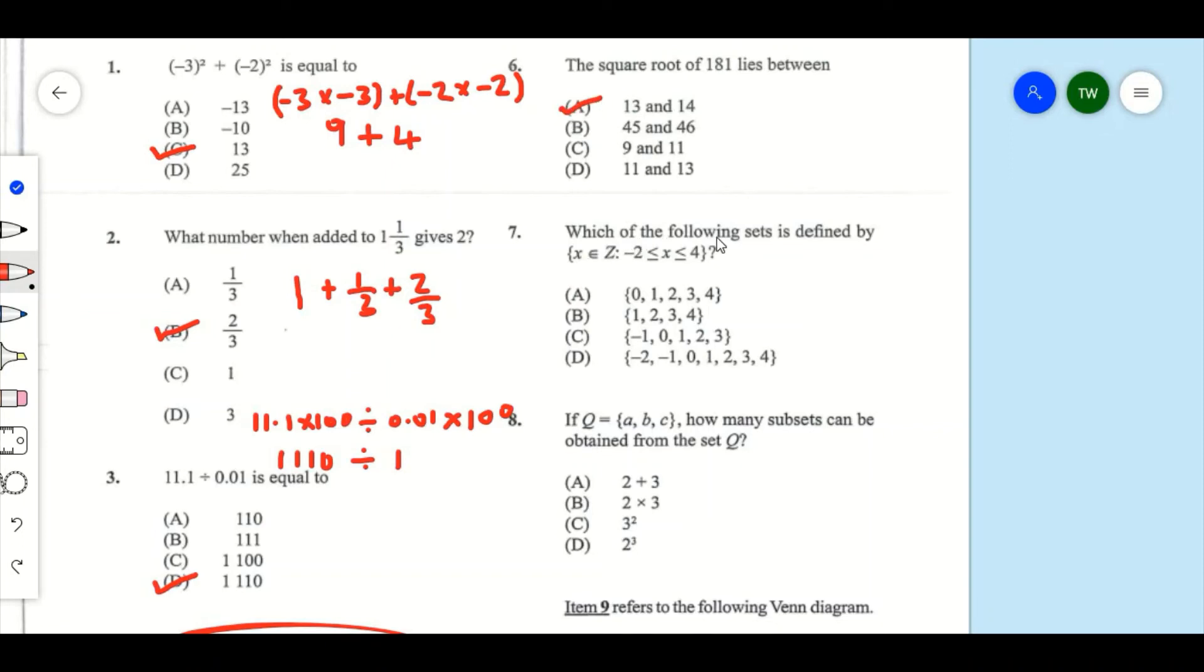Number 7: Which of the following set is defined by x ∈ Z such that x ≥ -2 and x ≤ 4? Now if x ≥ -2, it means -2 is going to be part of the answer. Numbers greater than -2 would be -1, 0, 1, 2, 3, and 4. But x ≤ 4, so these numbers satisfy this inequality. So the answer is D.